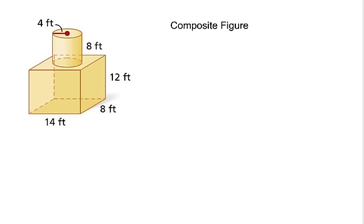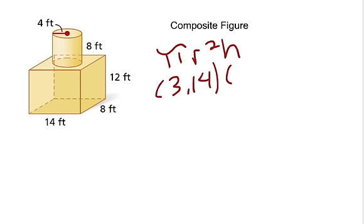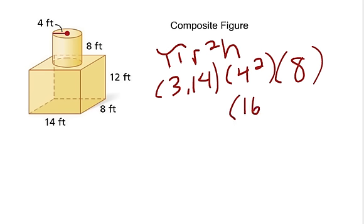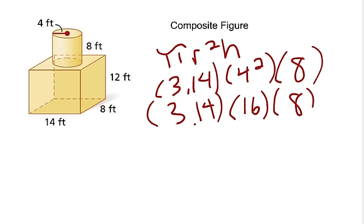This is a composite figure, which means two three-dimensional figures are put together and you find the volume of the entire unit. Starting with the cylinder: the formula is pi r squared h, so we have 3.14 times the radius of 4 squared, times the height of 8. 4 squared is 16, and then we multiply 3.14 times 16 times 8, which equals 401.92.